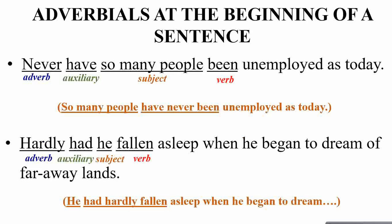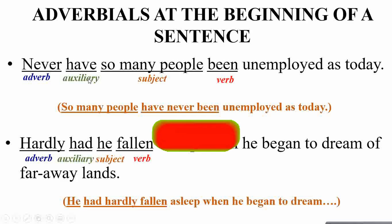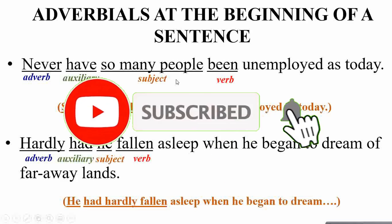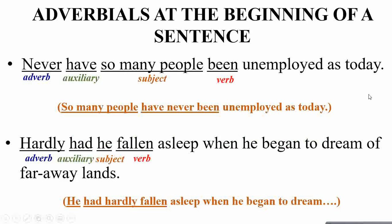Here are a few examples. 'Never have so many people been unemployed as today.' Here 'never' is the adverb, followed by auxiliary 'have,' then subject 'so many people,' then verb 'been,' and the rest of the sentence. Compare this with the middle position: 'So many people have never been unemployed as today.' The beginning position gives more stress and emphasis on the whole idea.